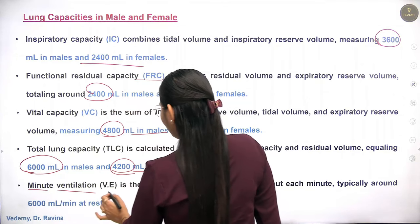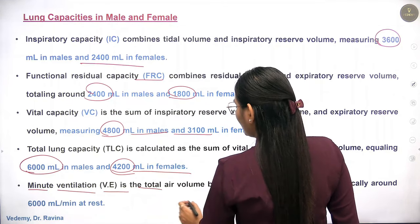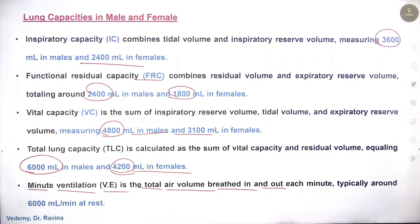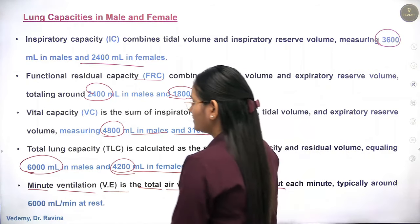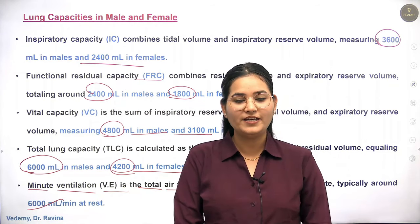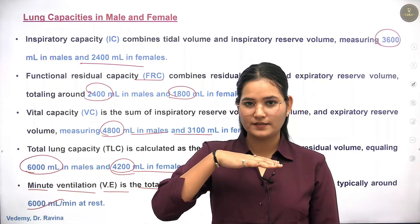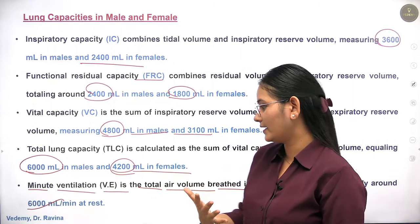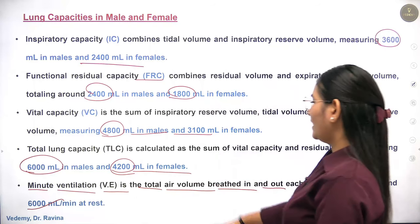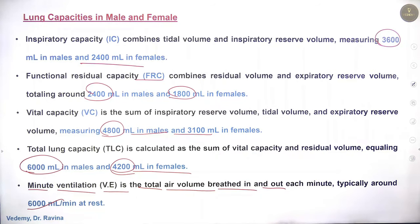Minute ventilation is the total air volume breathed in and out each minute — typically around 6 liters or 6000 ml per minute. Ventilation simply refers to what happens when you inhale and exhale. Minute ventilation is 6 liters per minute.